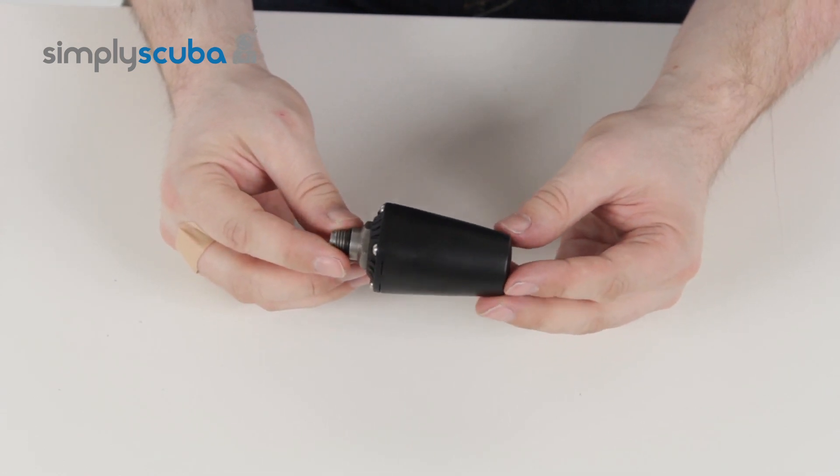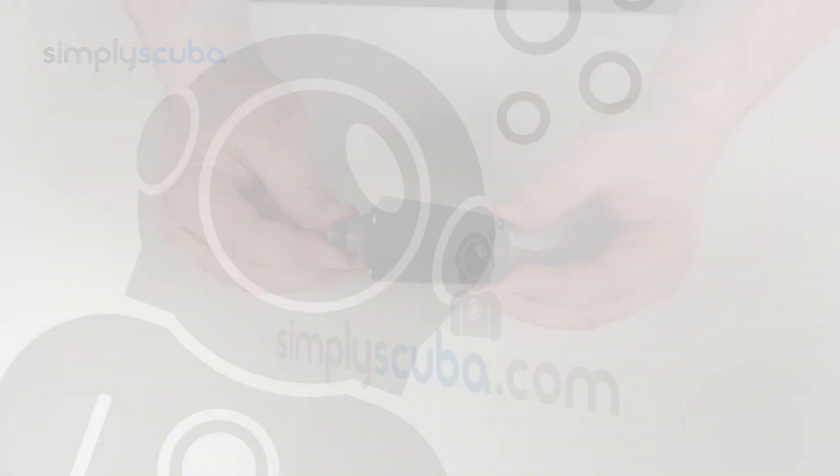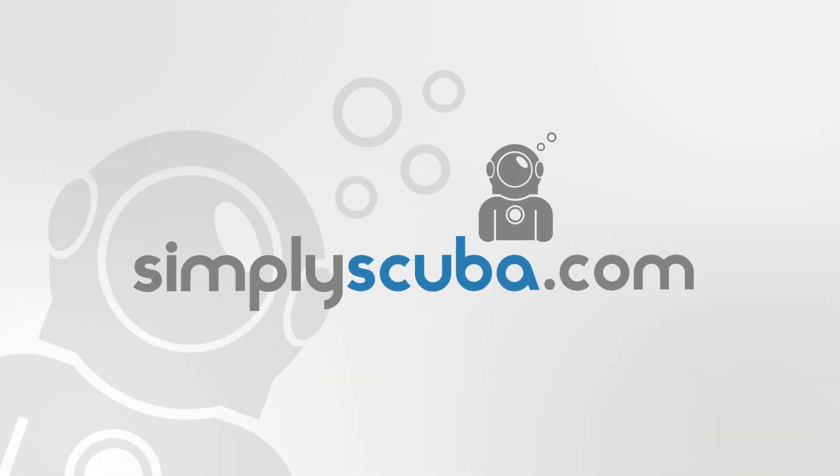And that is how to replace the battery for your Suunto transmitter.